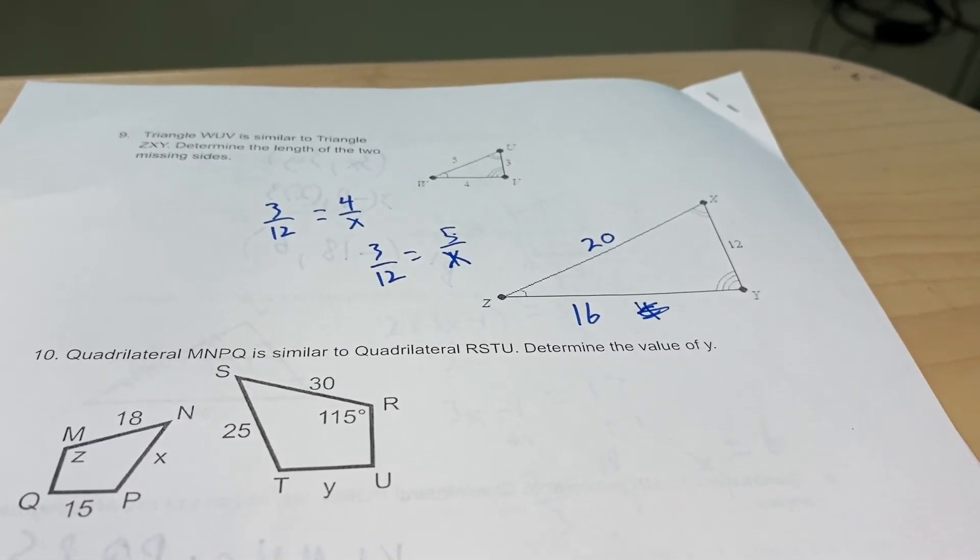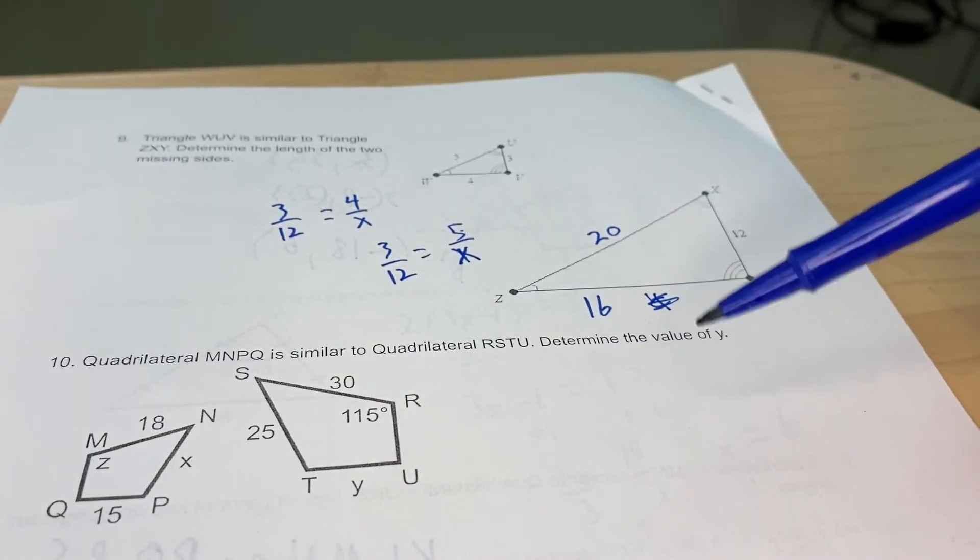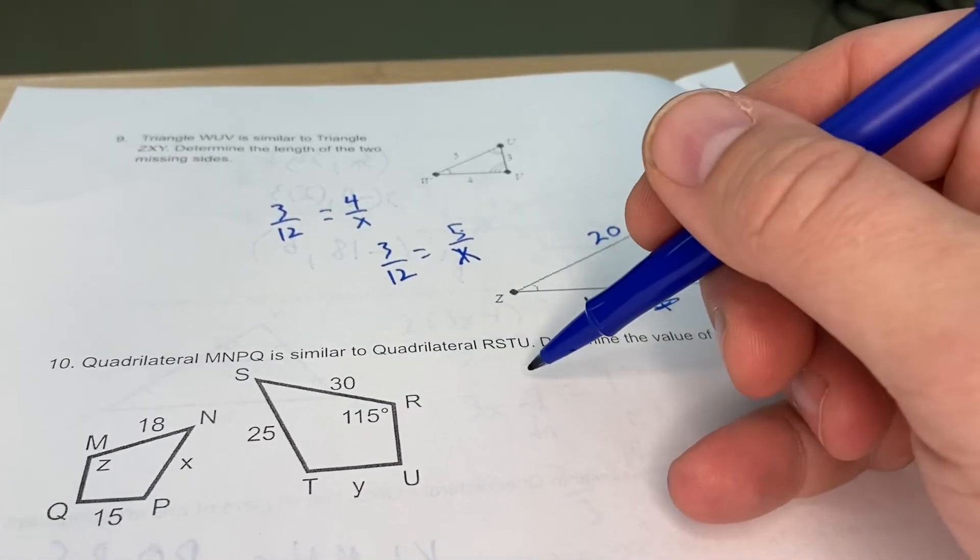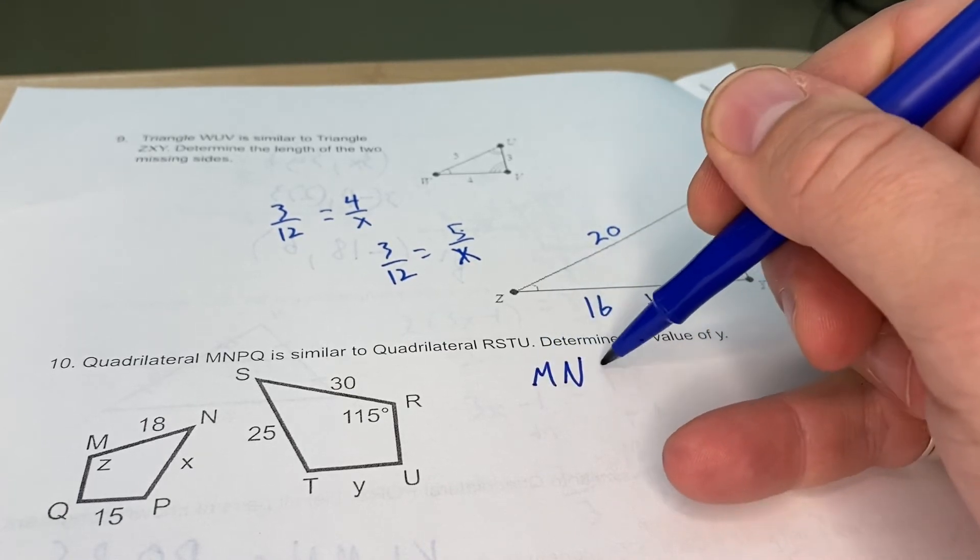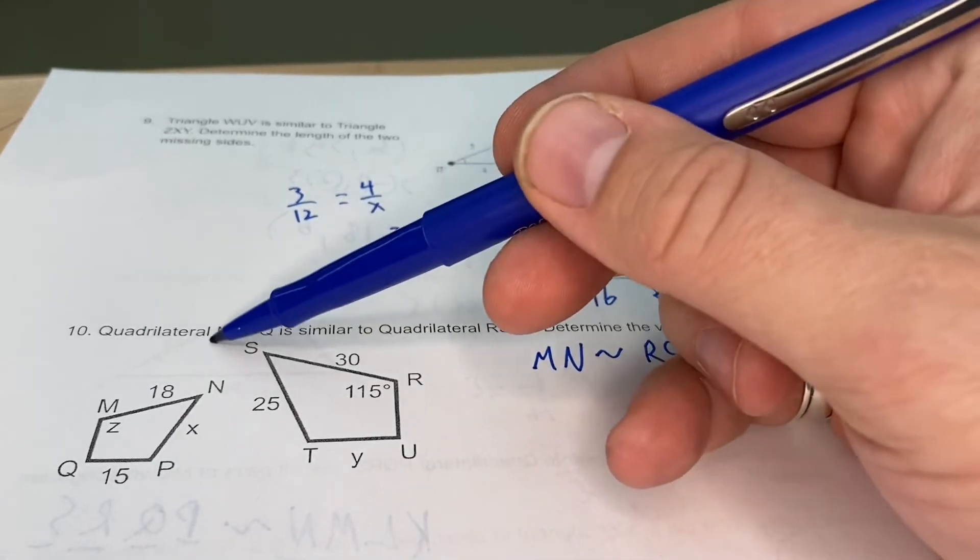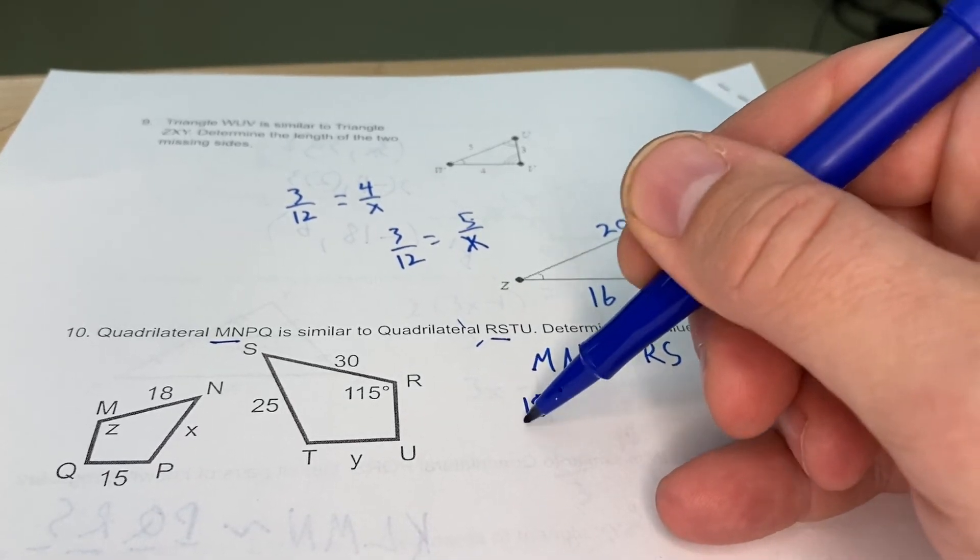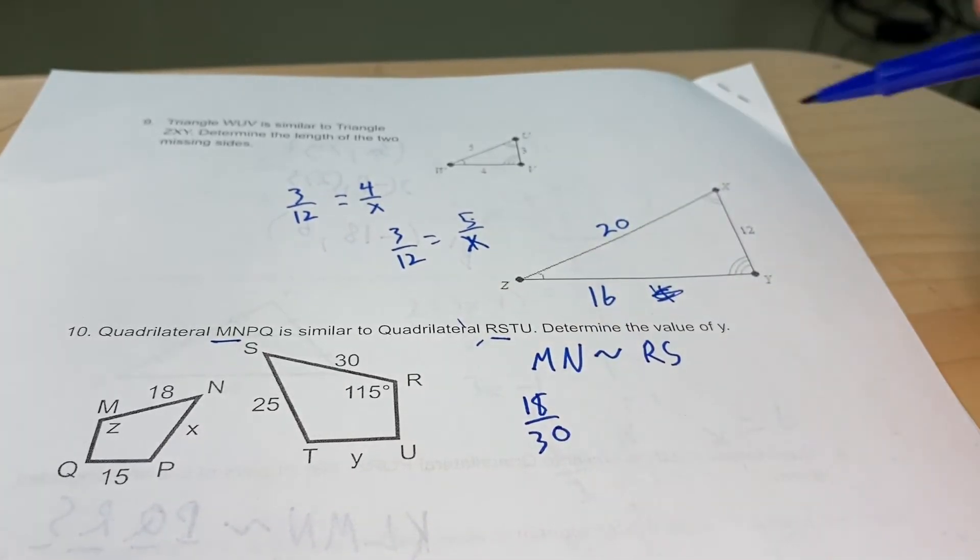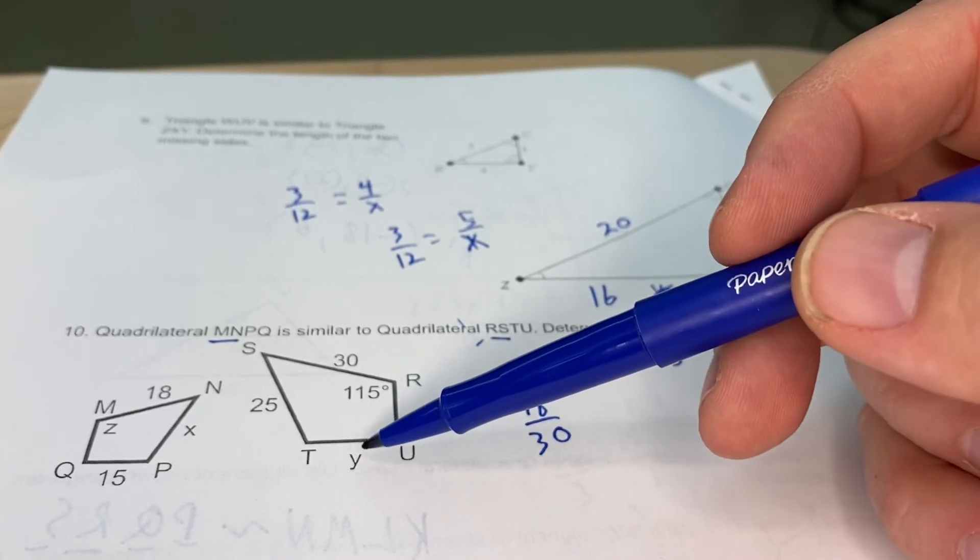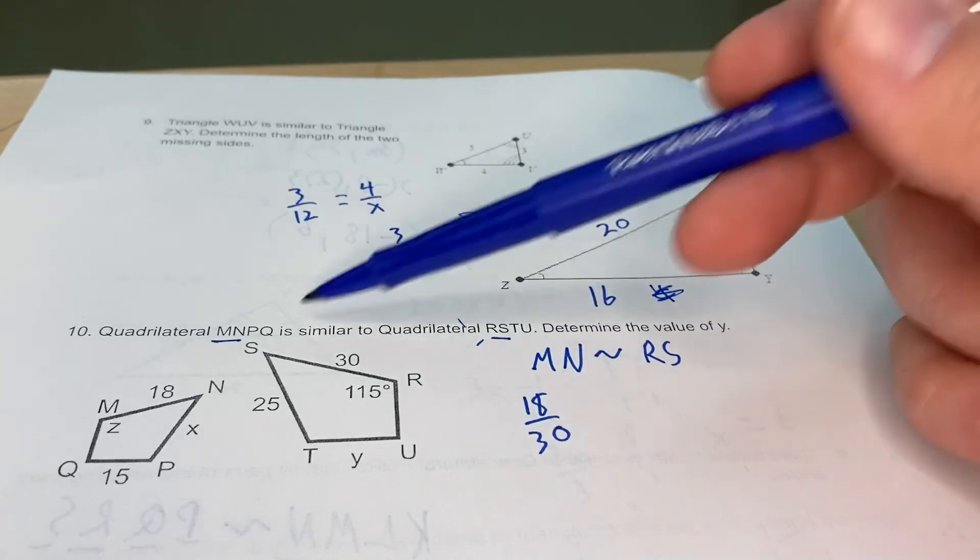Quadrilateral MNPQ is similar to quadrilateral RSTU, determine the value of y. So there's a lot of different things here. It's important to know that MN is similar to RS. We have those in that order in our statement. So that means we've got 18 as compared to 30. The value of y is another side, not an angle. So we know it's TU and PQ. So on our smaller one, we have 15 and then we have our missing statement.